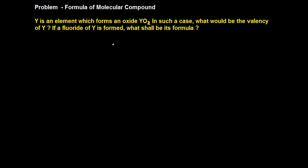Okay, let's take a problem to see whether you've understood properly how we write the formula of a molecular compound. Y is an element which forms an oxide YO2. So Y is an element and there is a compound YO2 which has been formed.